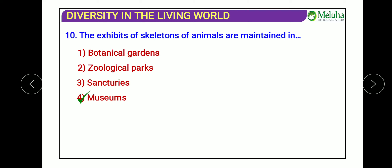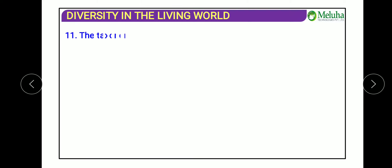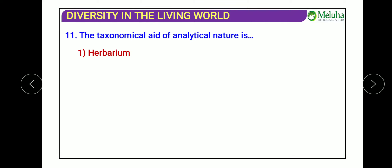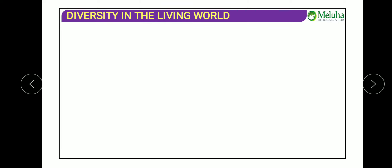The next question: which taxonomical aid has an analytical nature? A herbarium just has information used as a referral. A museum stores specimens used as referrals. A key is the taxonomical aid with an analytical nature — it has contrasting character pairs called couplets, and every statement produced using a couplet is called a lead. The answer is key.